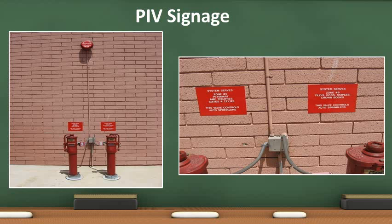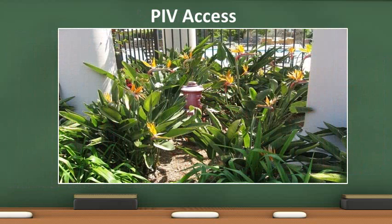In these photos, the signage indicating the buildings served is appropriately placed. Also note the sprinkler bell in the photo on the left. It is properly labeled with the type of alarm and instructions to call 911 when sounding. Note that three feet of clearance is required to all sprinkler system components. This PIV is obstructed and the vegetation will need to be removed.